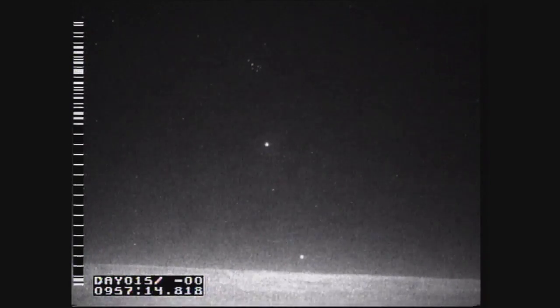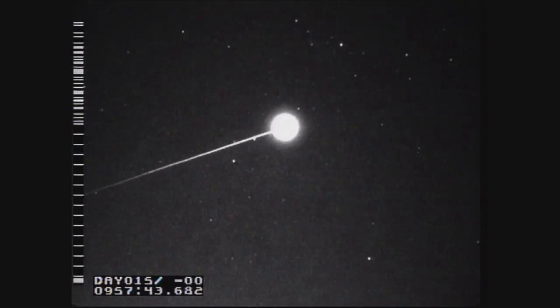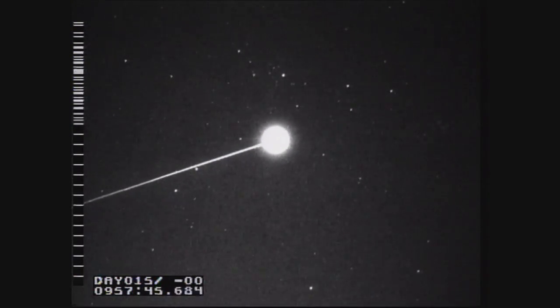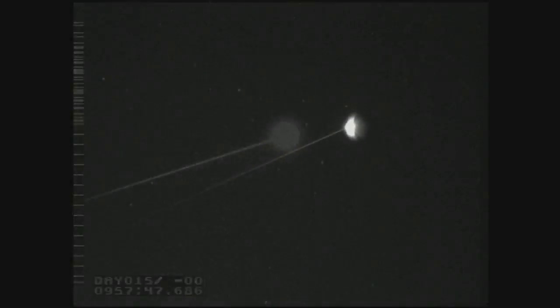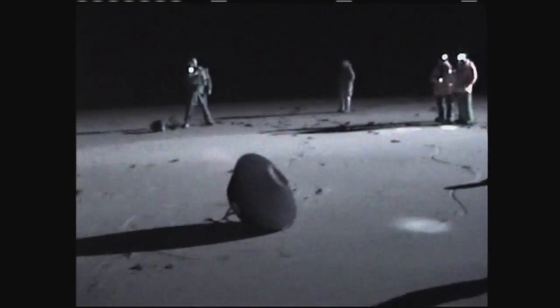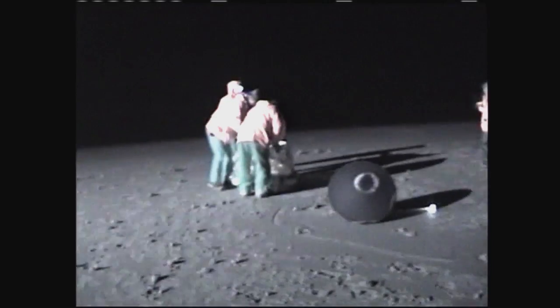Slightly denser than balsa wood, PICA proved itself to be highly effective as the heat shield material that protected the Stardust capsule during its return to Earth in January of 2006. It set the record for the fastest Earth reentry speed of any human-made object on its return from deep space.